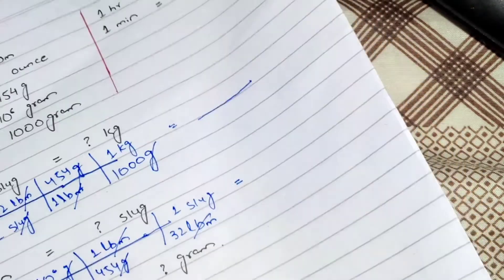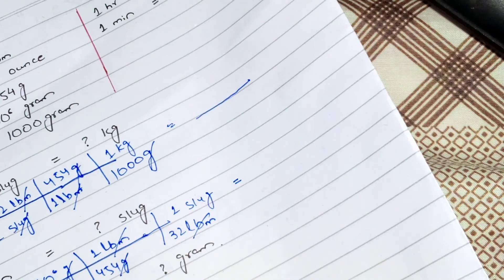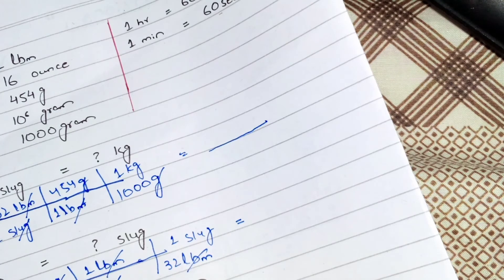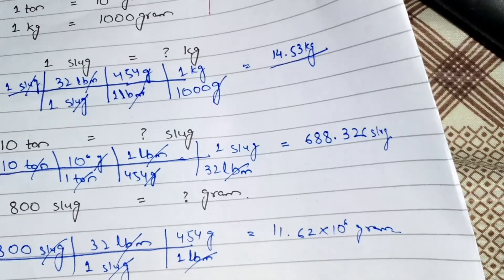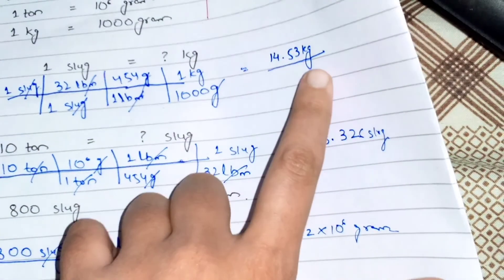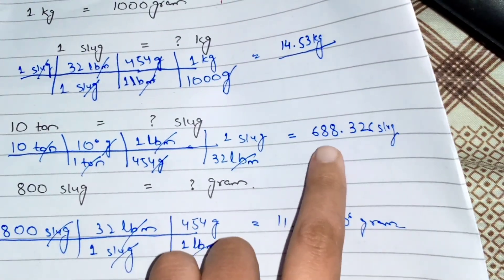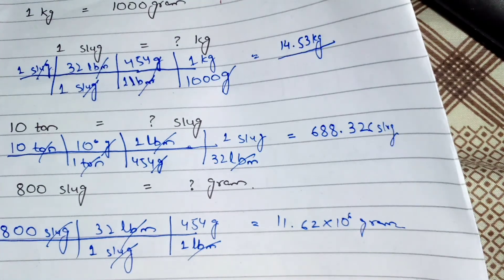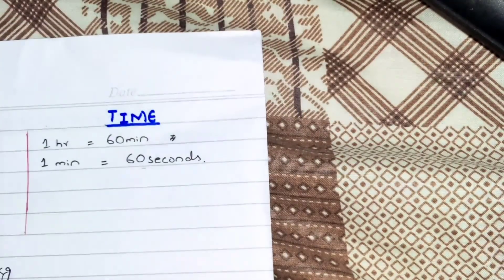These were all our questions of mass conversion. The answers are: 1 slug equals 14.53 kg; 10 ton equals 688.326 slug; and 800 slug equals 11.62 × 10 to the power 6 gram. In the next video we will discuss how to convert time units. If you have any confusion, ask in the comment section, and please subscribe and share with your friends.